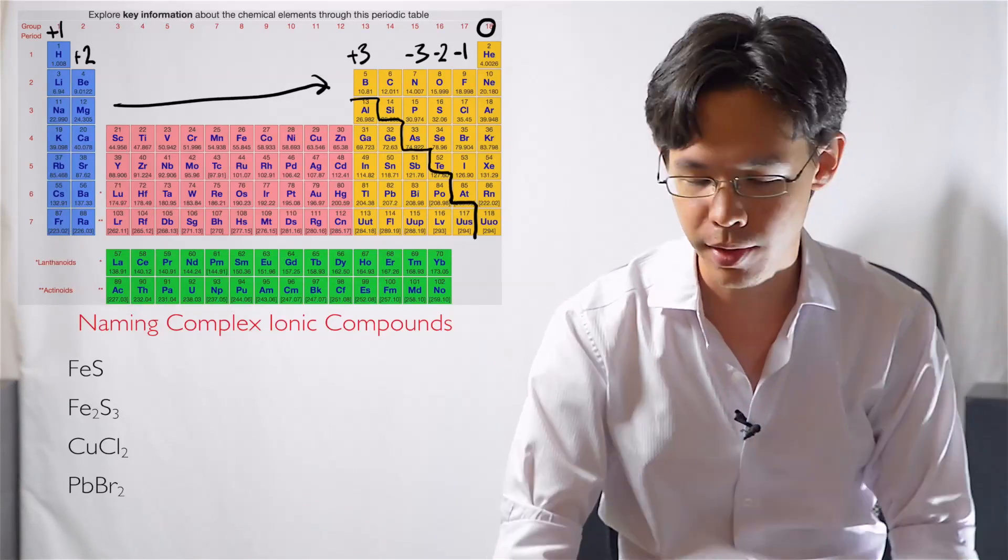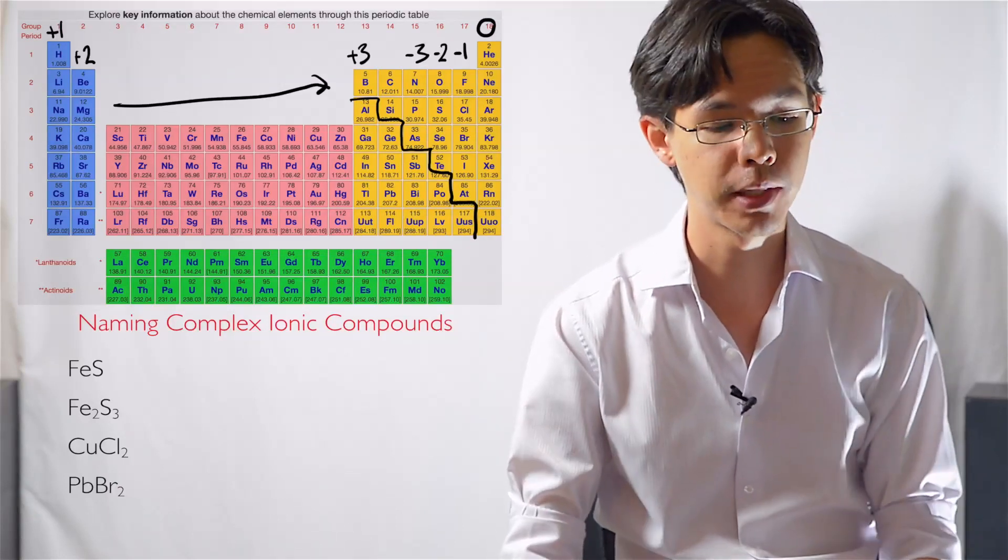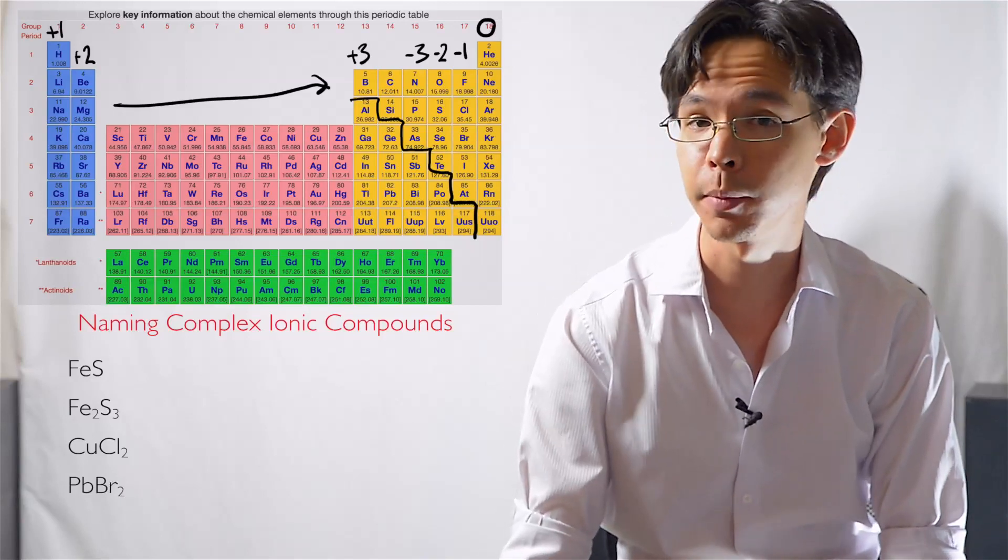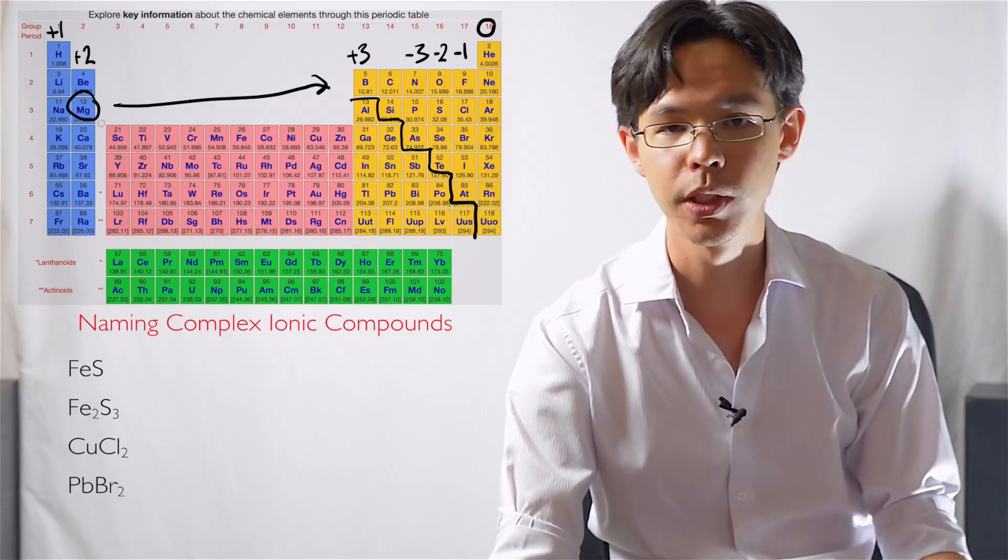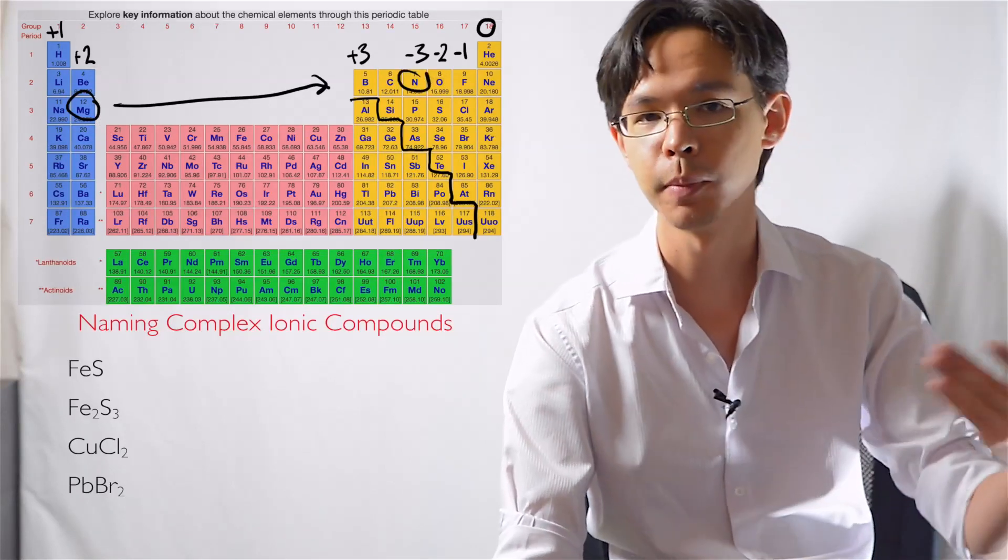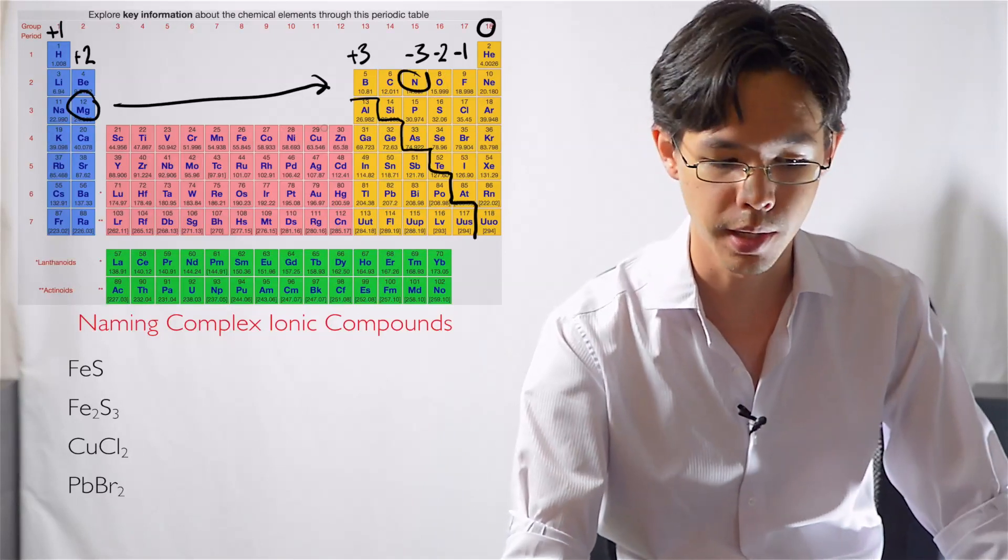So knowing that rule, back to the transition metals. Transition metals don't behave like these regular nice rules that the rest of the periodic table does. You know every magnesium atom will always be positive two. Every nitrogen atom will always form a negative three charged ion. However, when you get to transition metal ions,